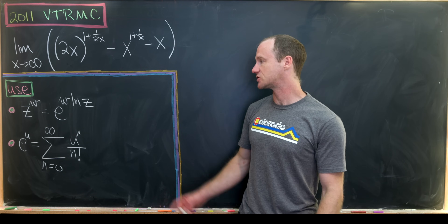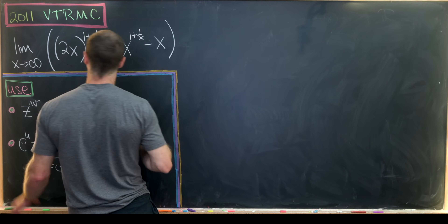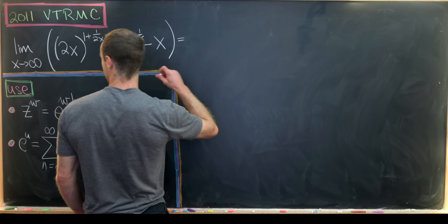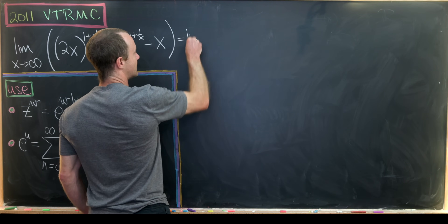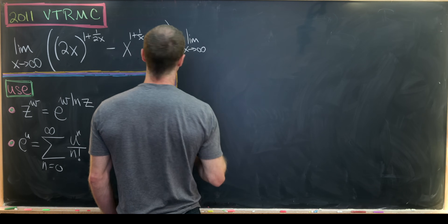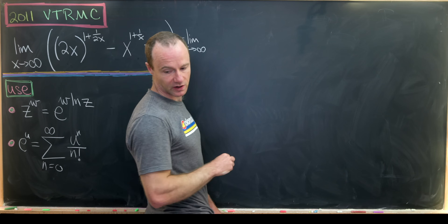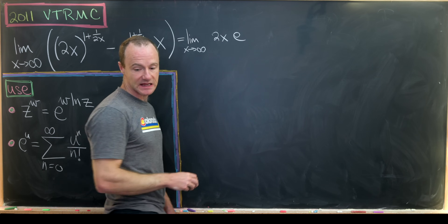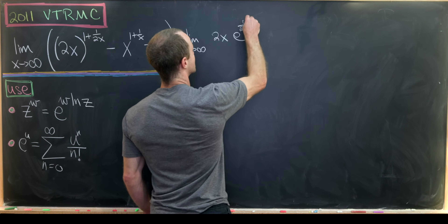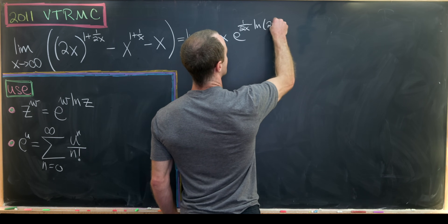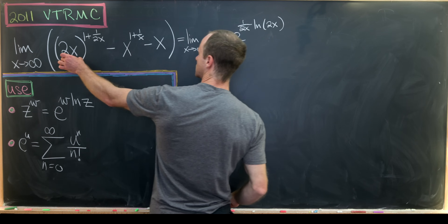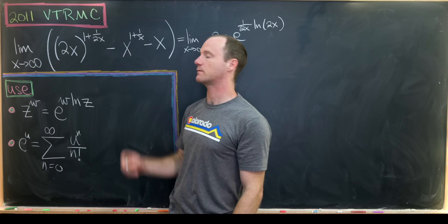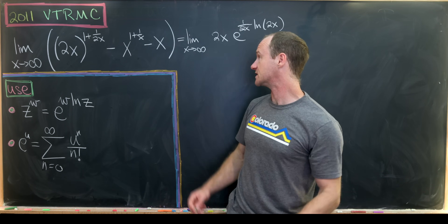Let's get started using this first fact. We take the limit as x goes to infinity, and the first term becomes 2x times e to the quantity (1 over 2x) times the natural log of 2x. Notice I factored 2x out — that's because we have 1 plus 1 over 2x, so it's natural to do that.